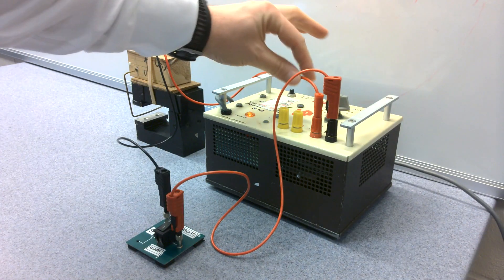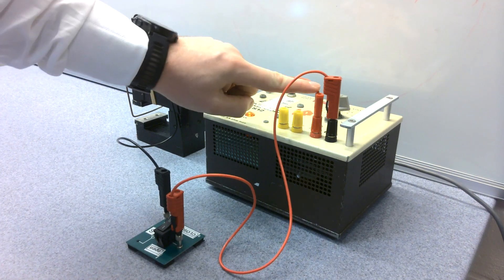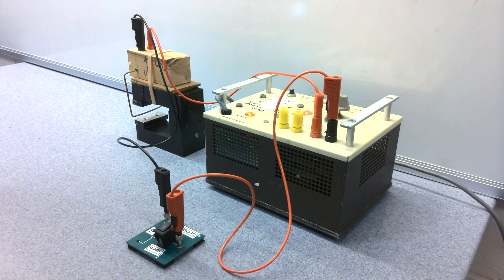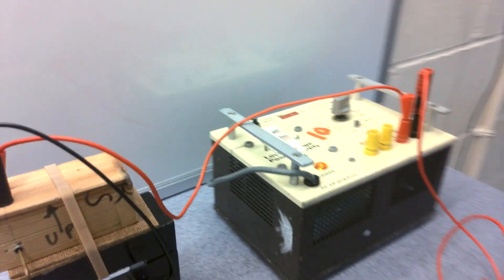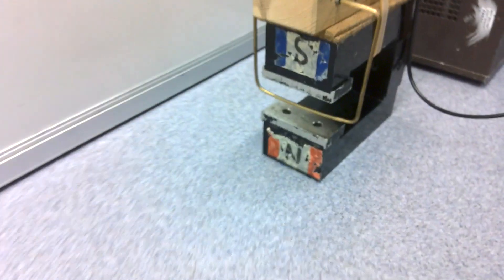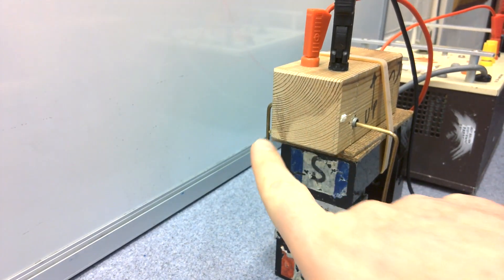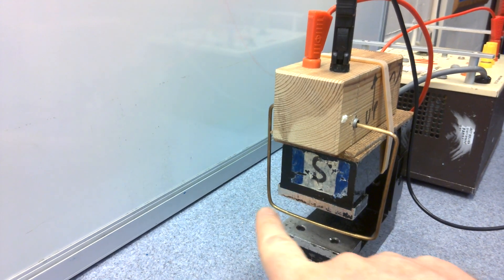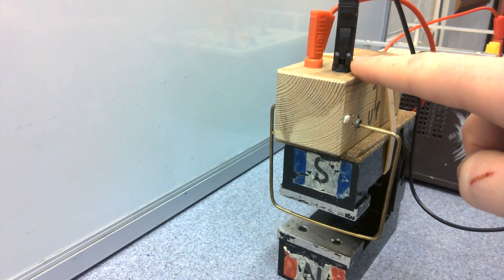Now, as a setup, the positive terminal of the power supply is going into this connection here. If I now move that around, that is connecting into this loop. So this is positive going towards the negative side, which is here.